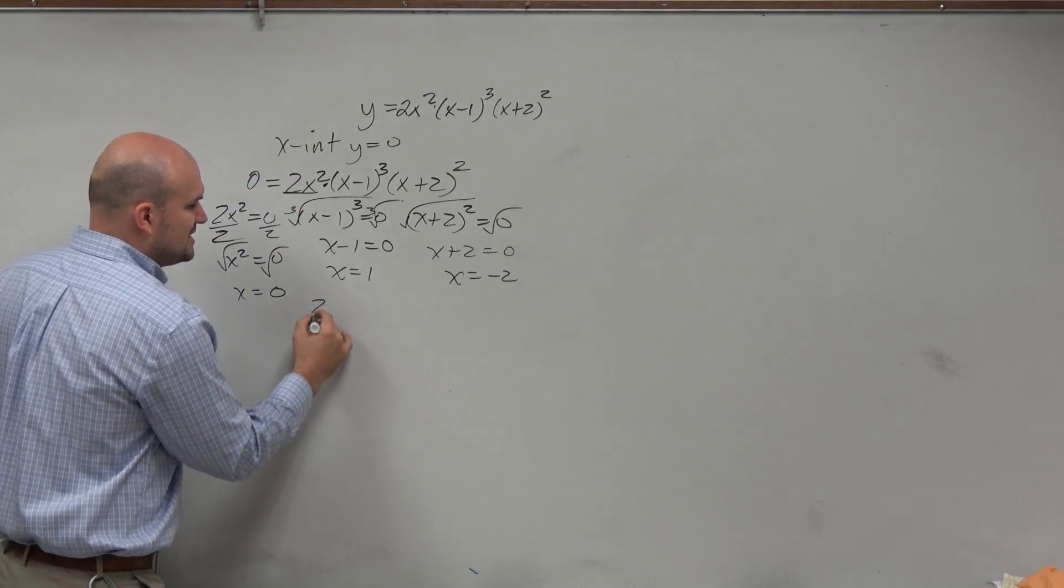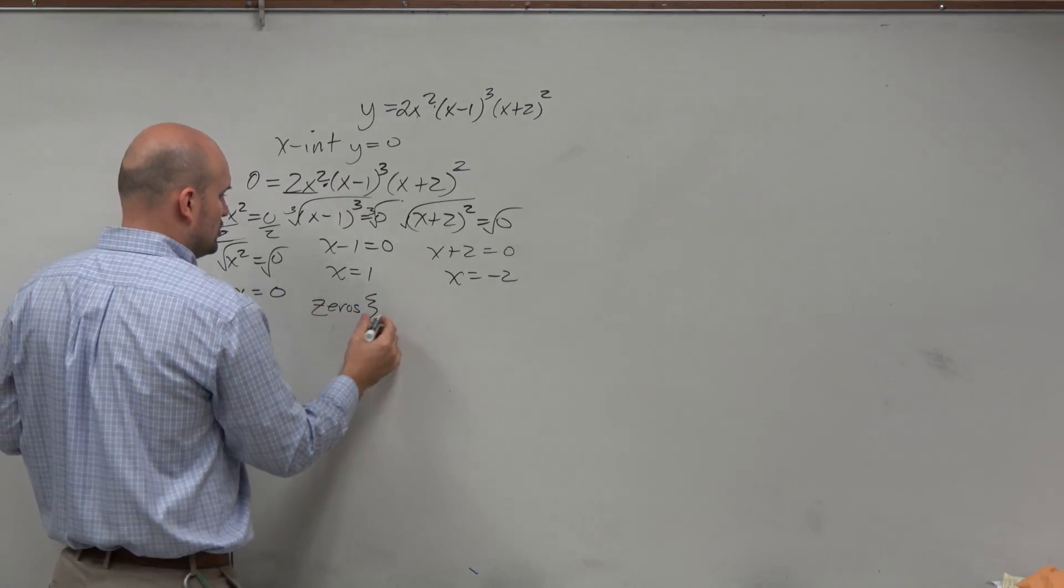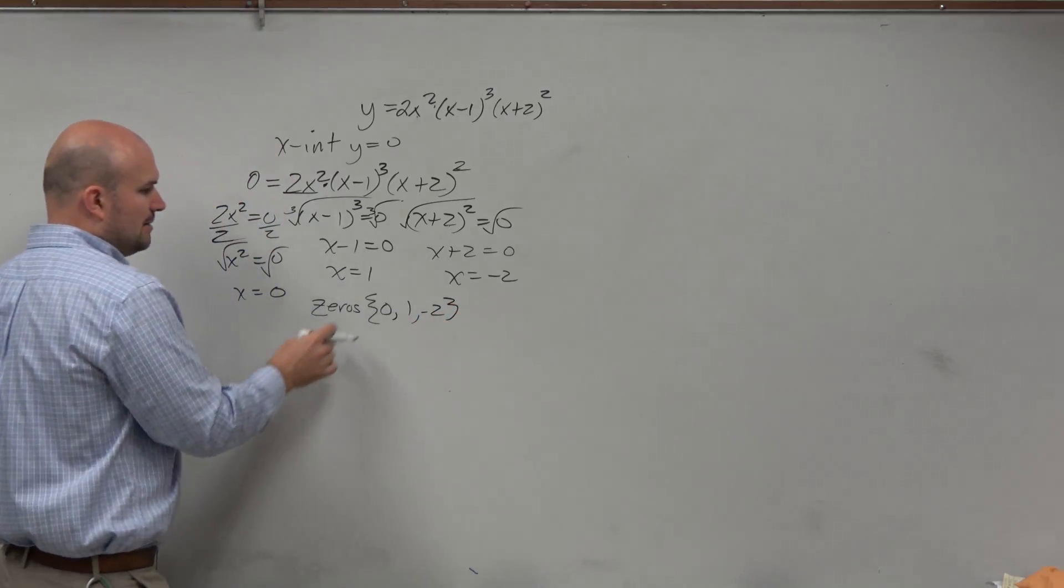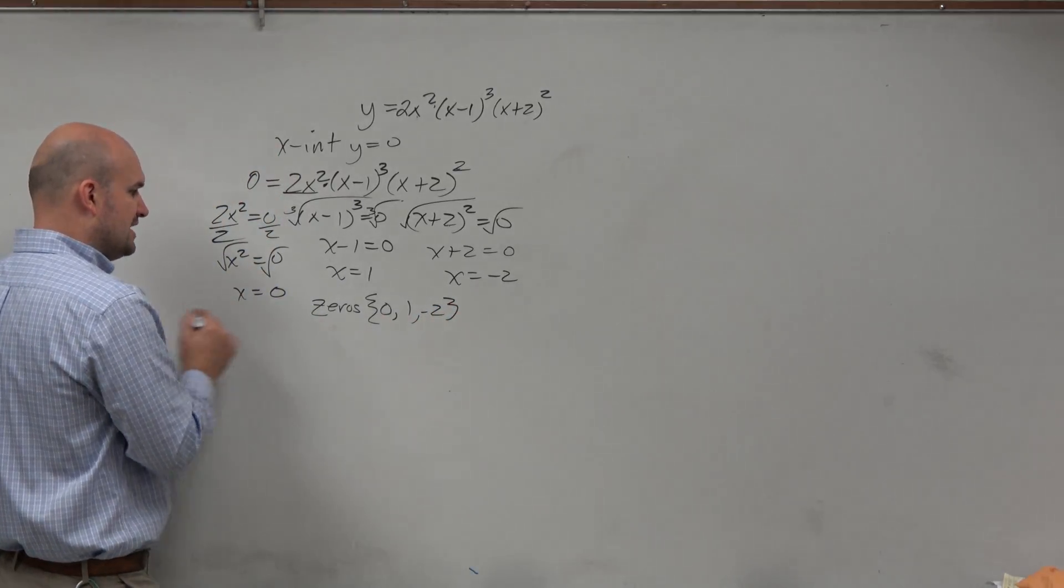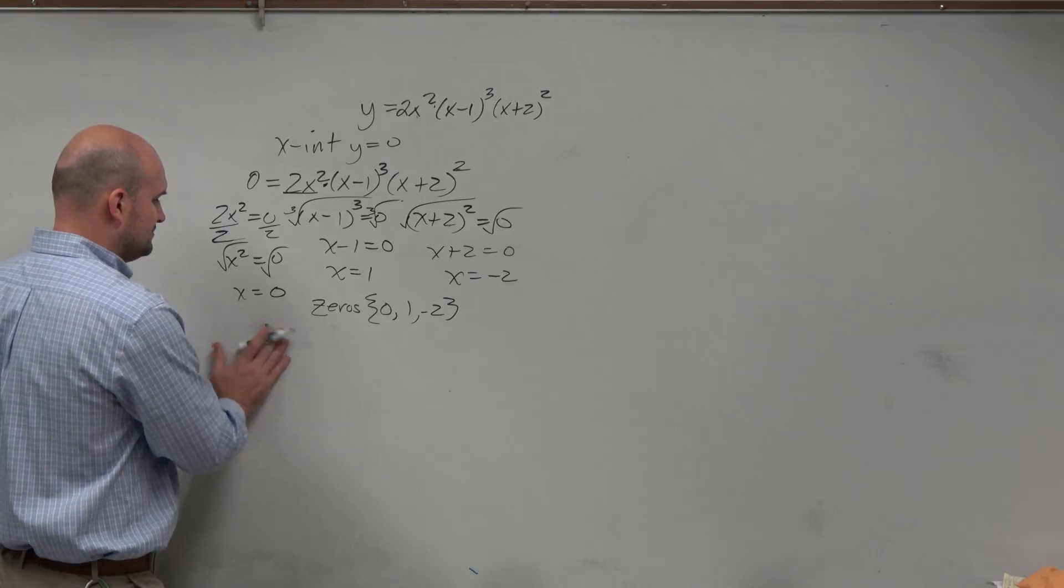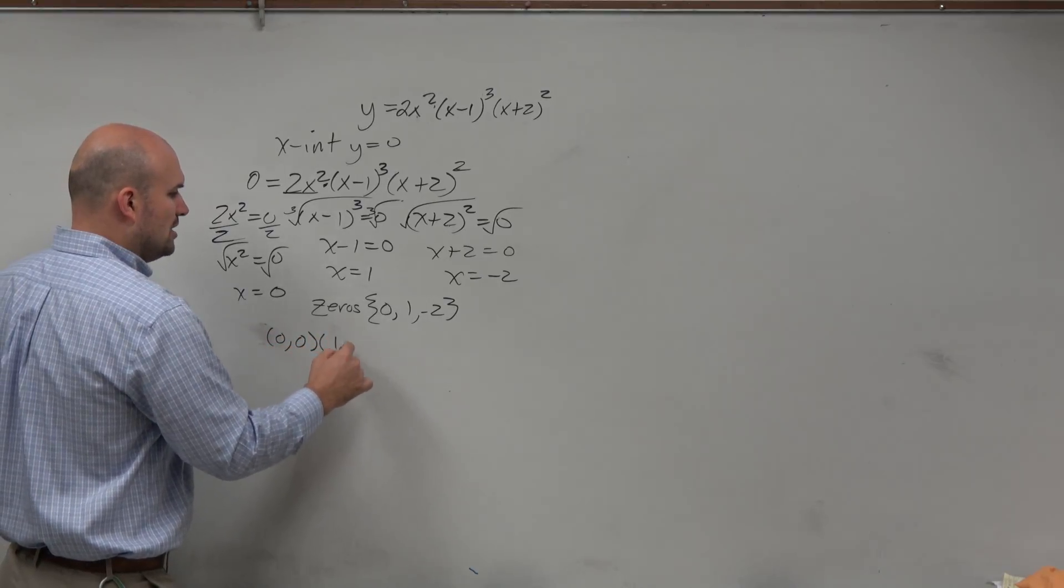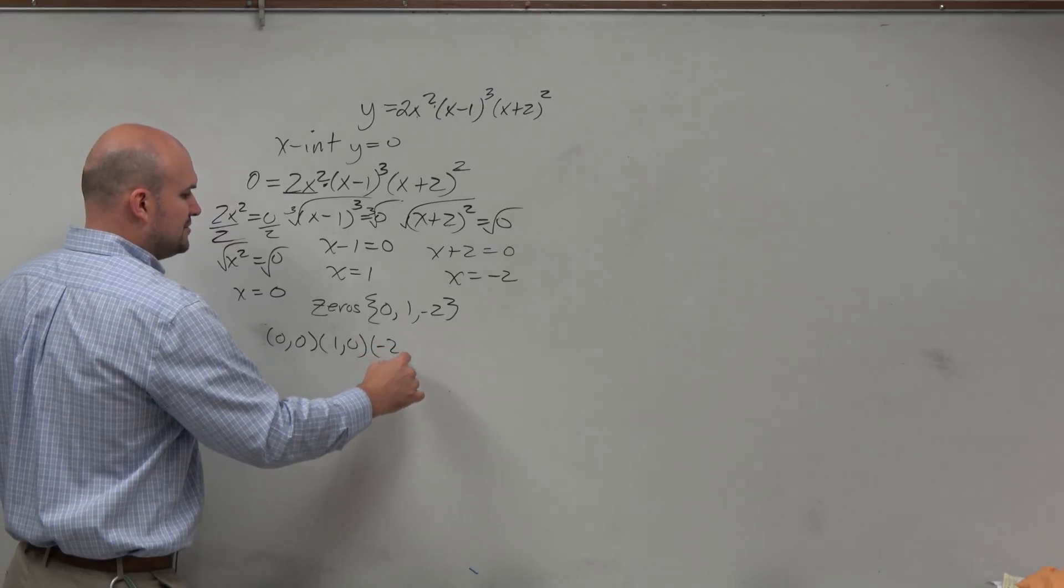So I could say that the zeros, even though I know that's not the portion of what I was talking about in this video, but the zeros here: 0, 1, and negative 2. You could say the x-intercepts then are at (0,0), (1,0), and (-2,0).